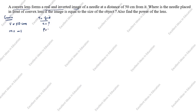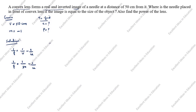For the solution, the convex lens formula is: 1 by f equals 1 by v minus 1 by u. So 1 by f equals 1 by v, where v is 50, minus 1 by u. We don't yet know u. The other parameter given is m equals minus 1. The magnification formula for a convex lens is m equals v by u.